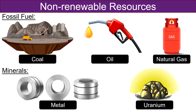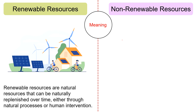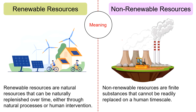Moving on to the differences between renewable and non-renewable resources. Regarding meaning: renewable resources are natural sources of energy that can be naturally replaced or regenerated over time, such as sunlight, water, wind, and geothermal heat — they are sustainable and do not run out when used responsibly. Non-renewable resources are finite materials that cannot be quickly replaced and will eventually run out; examples include fossil fuels like coal, oil, and natural gas, and minerals like metals and nuclear fuels. Once used, they cannot be easily replenished, making their long-term availability a concern.